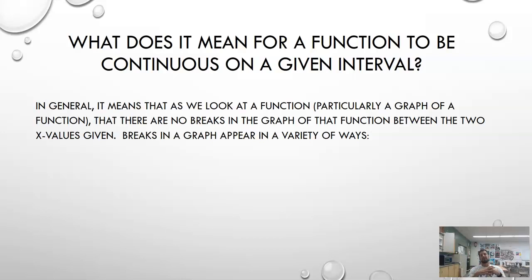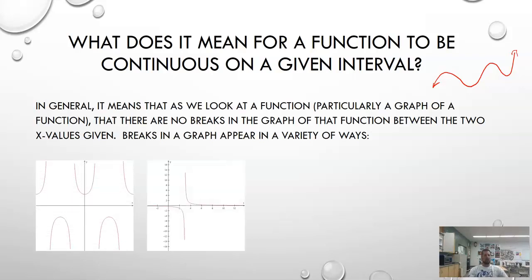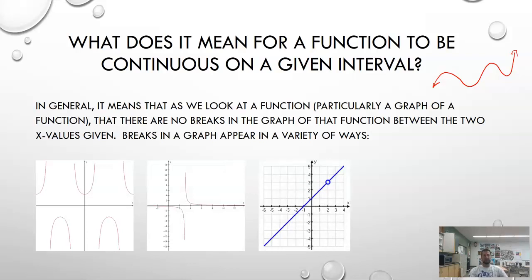There are two different types of continuity that we talk about — one that you're probably fairly familiar with and one that has more to do with calculus. When we look at a function on a given interval, if we say a function is continuous in general, basically what we're saying is as we look at how the function is drawn from left to right, a function is continuous as long as you don't have to lift up your pencil. If there's a break in the graph at some x value — you might see asymptotes or a hole in the graph — that is called a discontinuity.